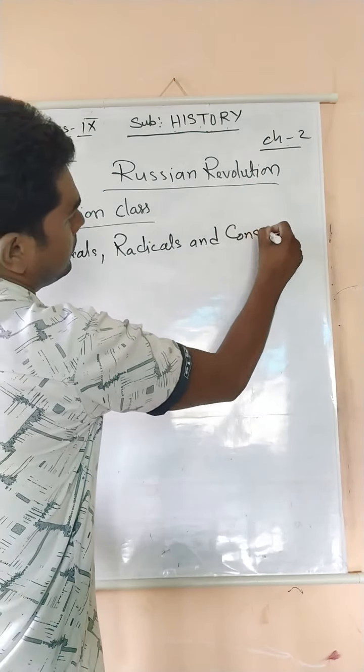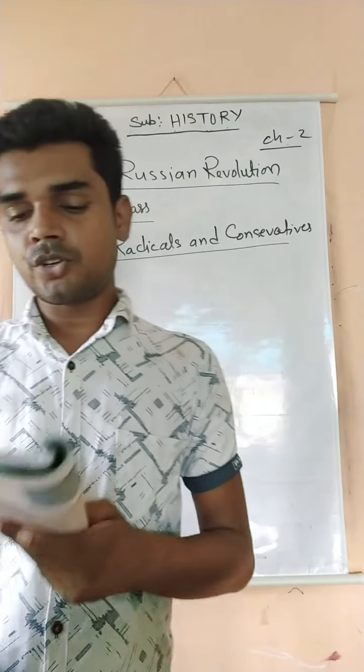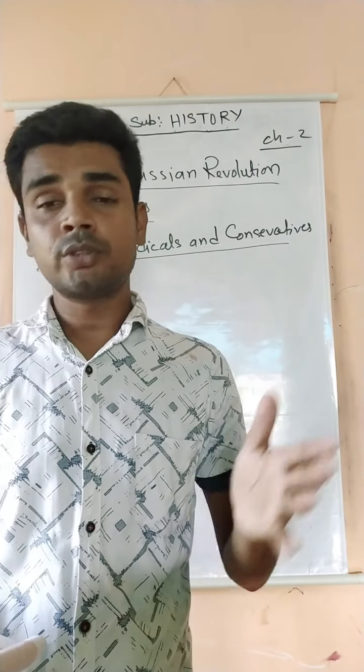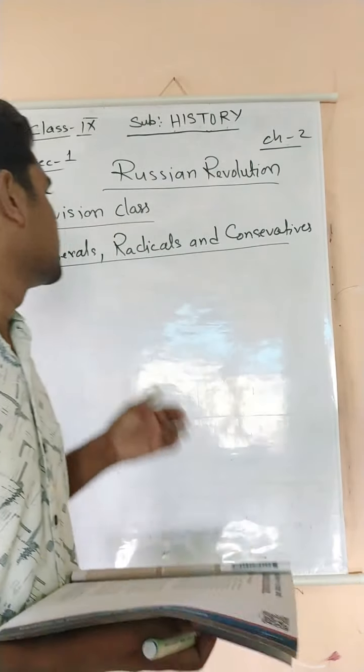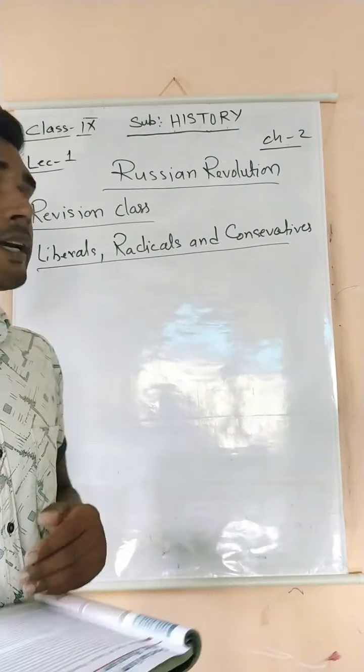Just like the French Revolution, in the Russian Revolution also, society was divided into three groups. The first one was the liberals, the second one was the radicals, and the third one was the conservatives. So basically there were three groups in Russia. Let's see what were the main aspects of each group.